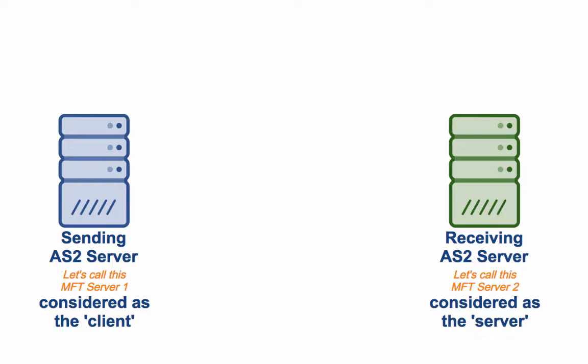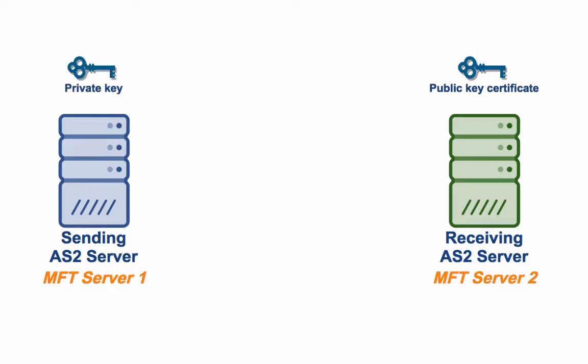In order for the server to authenticate the client, the server must possess the public key that corresponds to the client's private key. If you want to try this out in a test environment, you'll need to set up those two AS2 servers. Setting up an AS2 service on Jscape MFT Server is easy — just follow the instructions in the video tutorial, the quick start guide to setting up an AS2 server. Just click the link in the description. You need to apply those instructions to both servers.